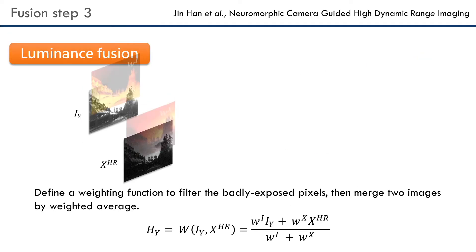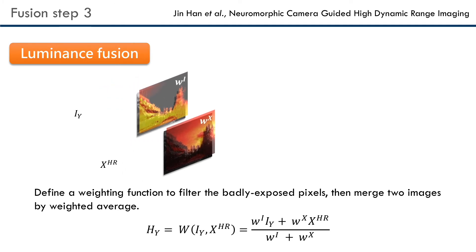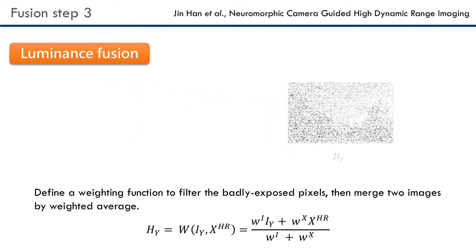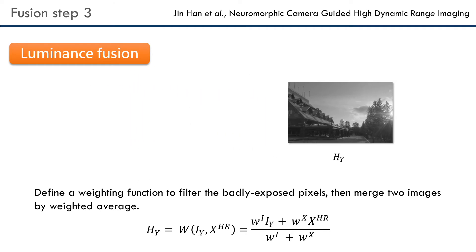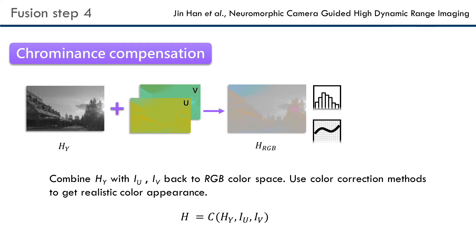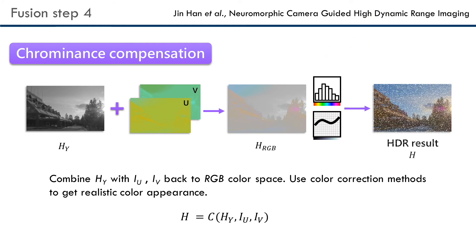The third step is merging the two images by weighted average to get a grayscale HDR image. Finally, we add the chrominance information to get a colorful high resolution HDR image.